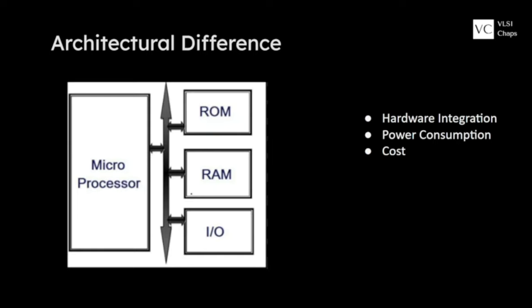Regarding cost, the heavy and bulky circuit of a microprocessor — with all its external peripherals connected to the chip — makes the whole system quite costly. In contrast, a microcontroller has all components readily available on a single chip, making a microcontroller-based system significantly cheaper than a microprocessor-based one.